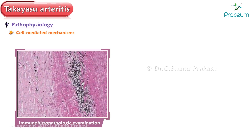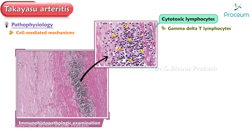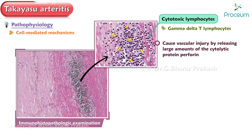Immunohistopathologic examination has shown that the infiltrating cells in aortic tissue mainly consist of cytotoxic lymphocytes, especially gamma-delta-T lymphocytes. These cells may cause vascular injury by releasing large amounts of the cytolytic protein perforin.